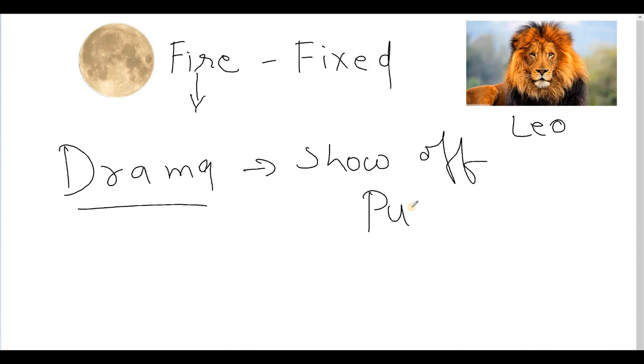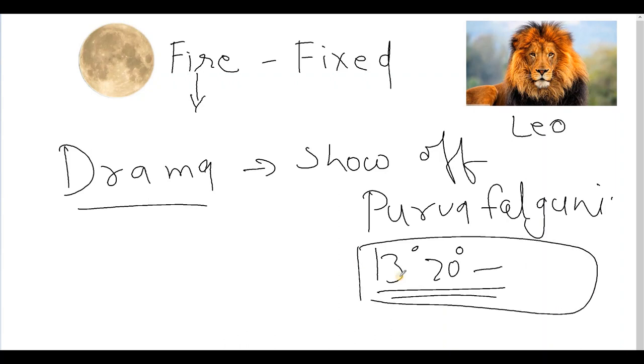And especially the Purva Phalguni nakshatra area of this sign of Leo, which happens to be from 13 degrees 20 minutes to the next 13 degrees 20 minutes - which is pretty much at the center of this sign - can give great interest in movies, in cinemas, in acting, in related art fields. And probably it is well understood that for this kind of manifestation, the placement of Venus should be strong in the horoscope.